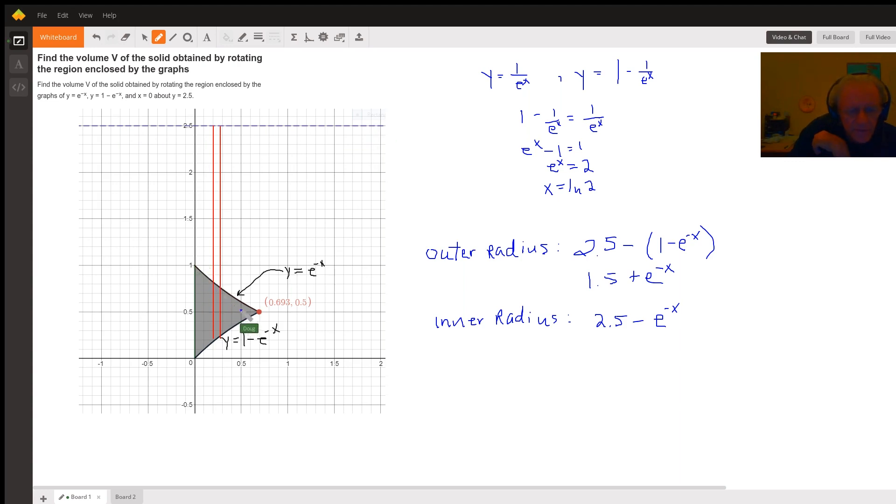And this is a portion of the graph of y equals e to the minus x. And this is the graph of y equals 1 minus e to the minus x. So this is the region that we're going to rotate about the horizontal line y equals 2.5.